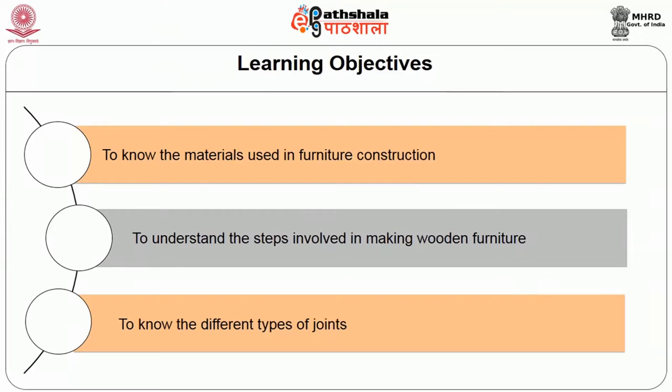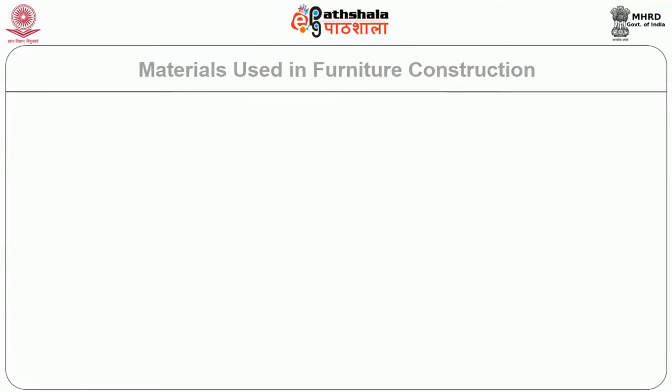Each material has its own characteristics and gives different effects. For example, wood is used for warmth and elegance; plantation wood is for sturdy simplicity, and so on. Now let us discuss about the qualities of various furniture materials used either for structural or aesthetic purposes. The objectives of this lesson are: to know the materials used in furniture construction, to understand the steps involved in making wooden furniture, and to know the different types of joints used in furniture construction.